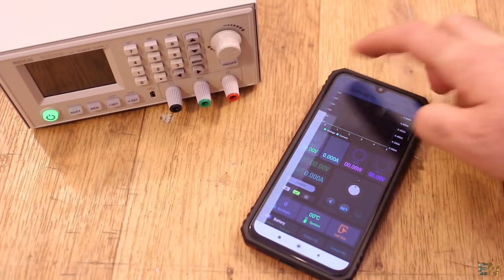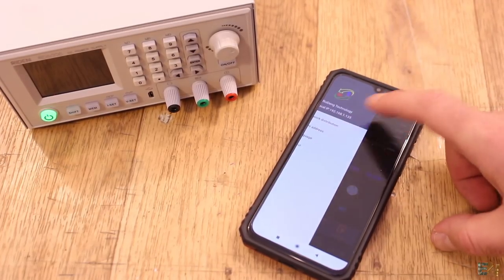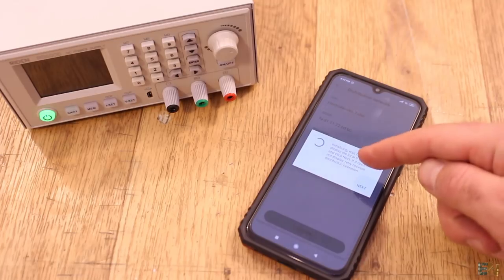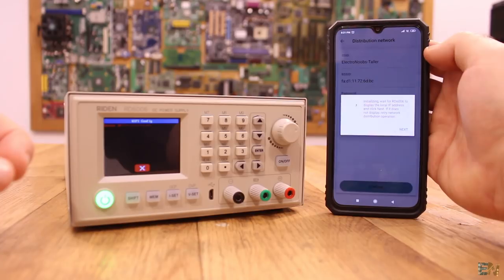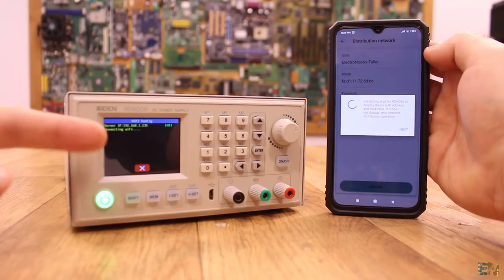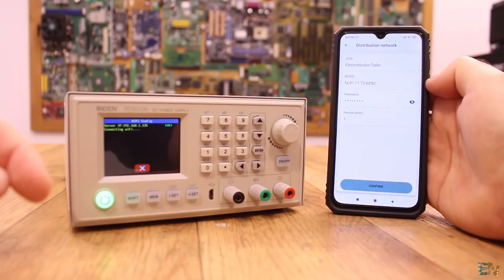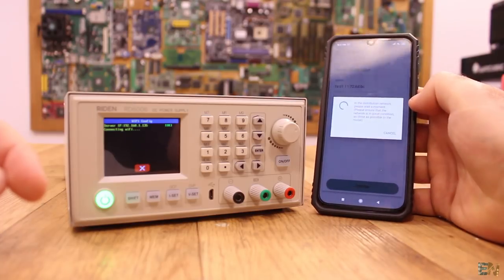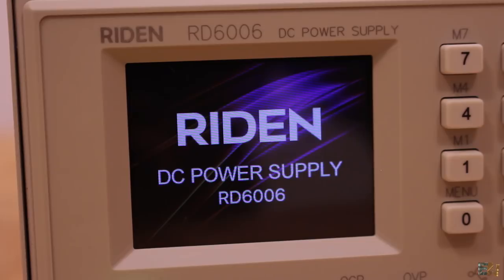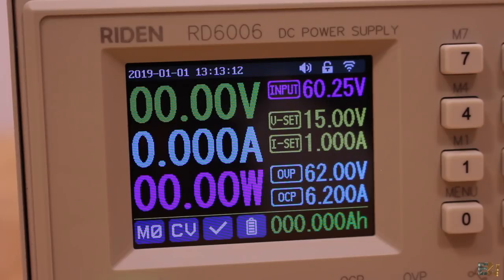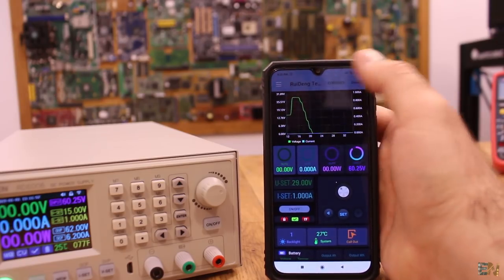Now you must reboot the supply for the configuration to take effect. But before you power back the supply, you have to go to the smartphone app and enter the network distribution. Now power up the supply and wait for the IP address to appear. When the IP appears on the display, press next on the smartphone and then click the confirm button. Wait for the connection to establish and you'll get the OK message on the display. Then the supply will reboot itself.